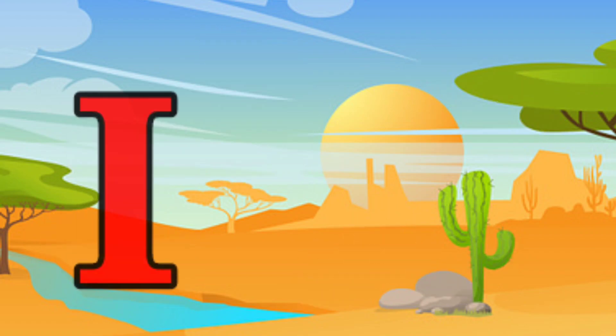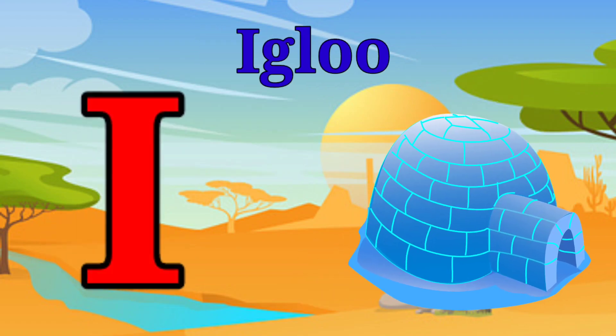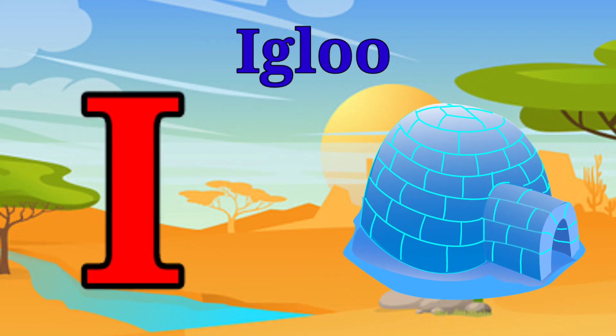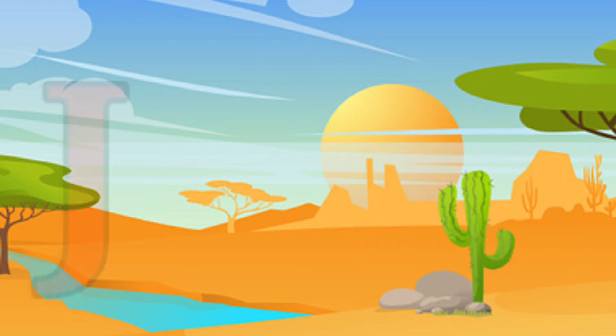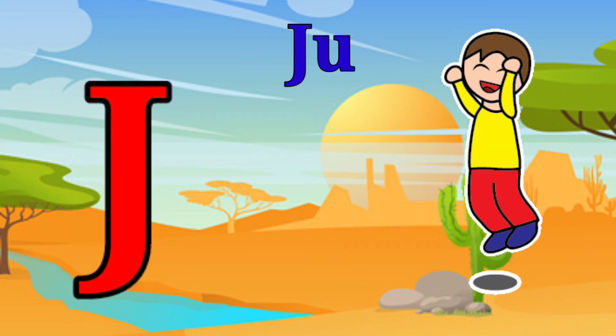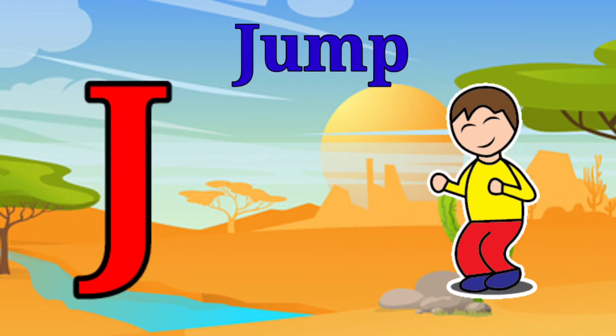I is for igloo, i-i-igloo. J is for jump, j-j-jump.